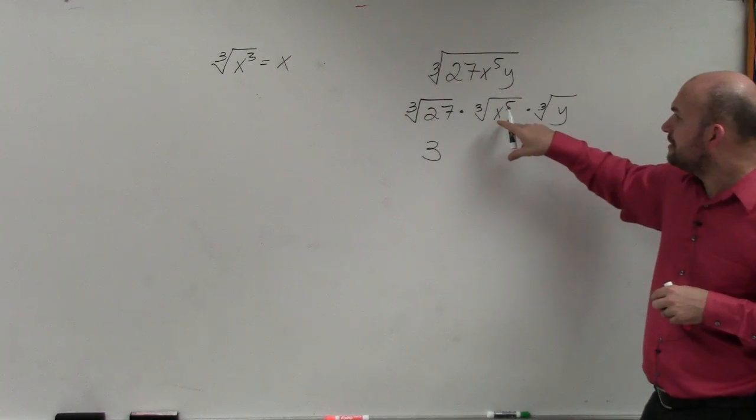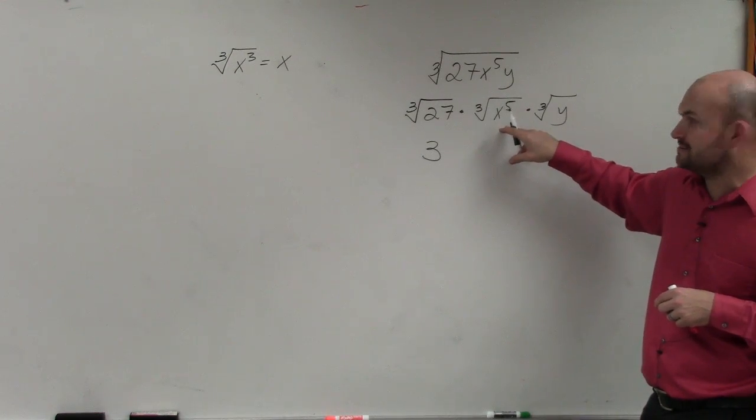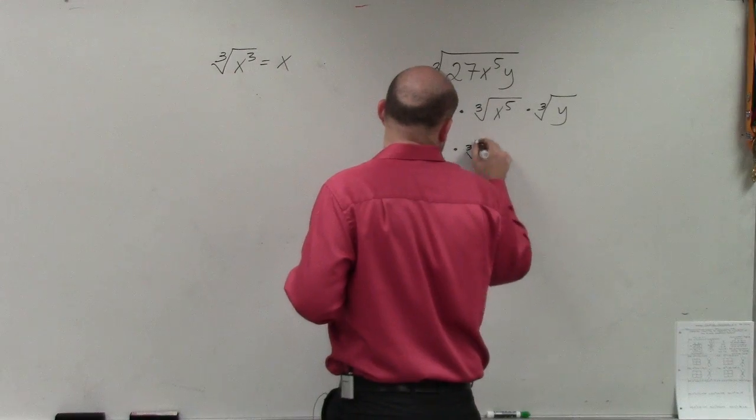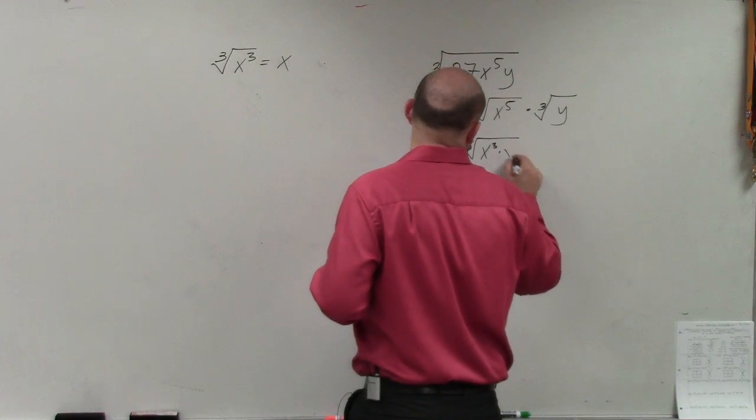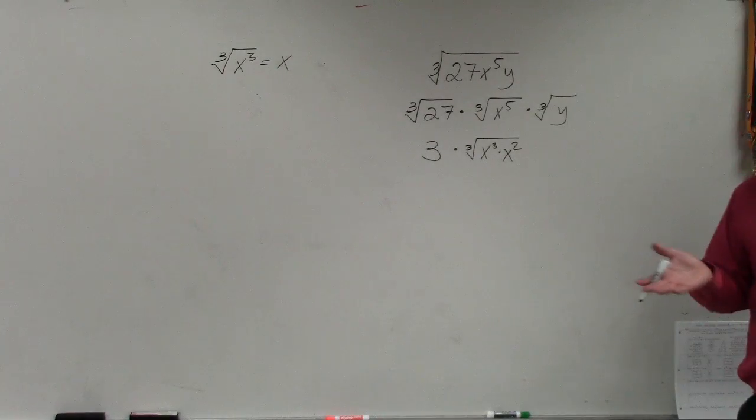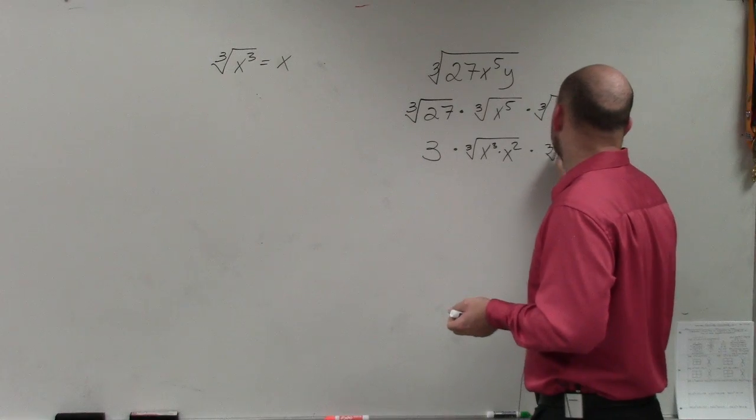So in this example here, x to the fifth is not the same thing as x cubed. However, I can break this down into x cubed times x squared. Would you agree with me that x cubed times x squared is the same thing as x to the fifth? Yes. And then times the cube root of y.